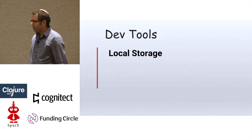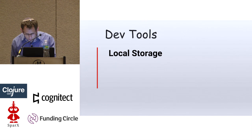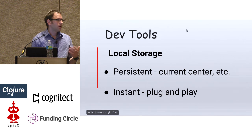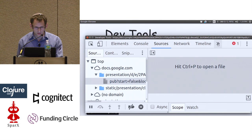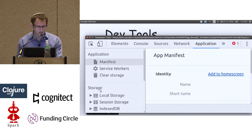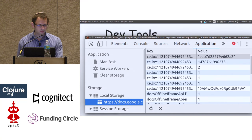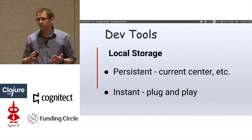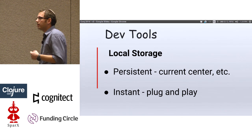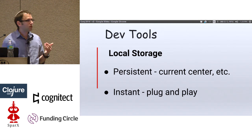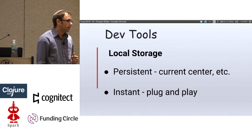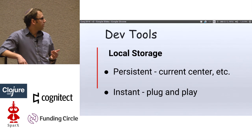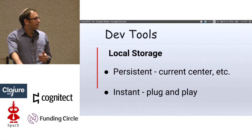Another thing the browser gives us is local storage — a small storage in the browser you can use for persistent data. You can open the browser's Application tab and see different variables you've saved. At Audix we use it for a few things. For example, a user who has different audiometric centers in different places: when he logs in to a computer in a given location, we save the ID of that center in local storage, and whenever he opens Audix it takes him to the correct center.